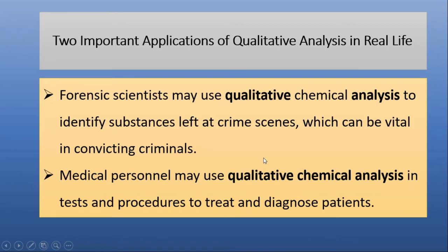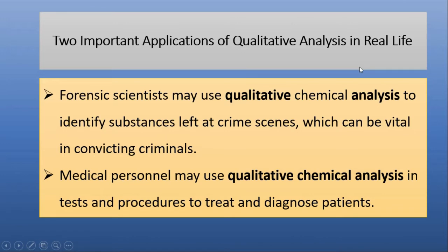There are certain ions which are very dangerous and poisonous. To check the quality of water we are drinking — whether it is pure or impure, and if impure, what sort of impurity is present — that is also performed with the help of qualitative analysis. I hope now you will get the idea why qualitative analysis is important for us.